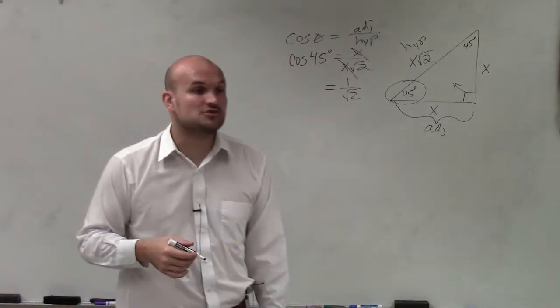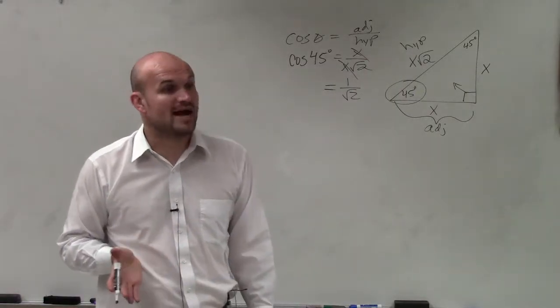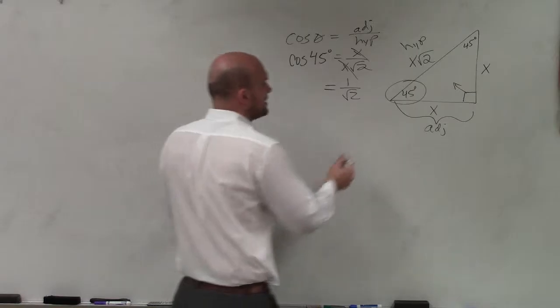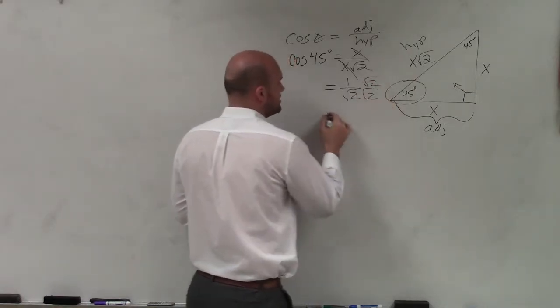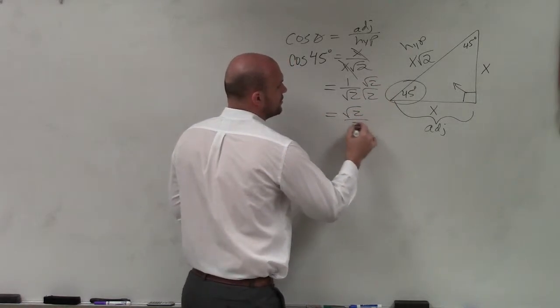And if you guys remember from algebra 1, you also learned how to rationalize your denominator. So I multiply by the square root of 2 on the top and the bottom, and I get the square root of 2 over 2.